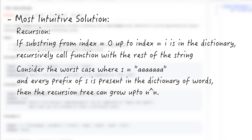Say if you're given a string of a bunch of letter a's and every prefix of this string is in the dictionary. Then you'll have to call this function every time when looping through the string — you will recursively call this function again and again. So in the worst case scenario, the runtime complexity for this most intuitive solution would be O(n^n), which is not something we would like to see in a coding interview. So let's think about how we could optimize that.